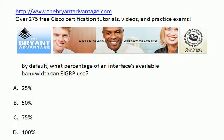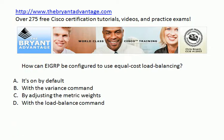By default, what percentage of an interface's available bandwidth can EIGRP use? Next question: how can EIGRP be configured to use equal cost load balancing? Is it on by default? Do you use the variance command? Do you set the metric weights or adjust them? Or use the load balance command?